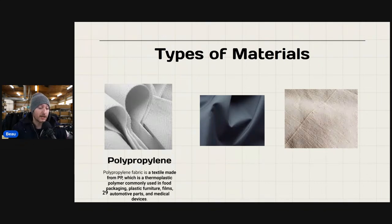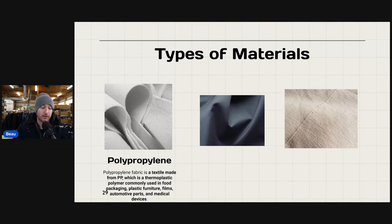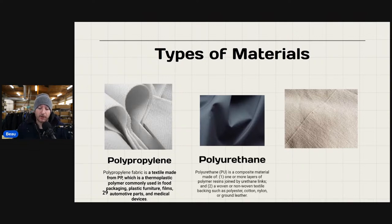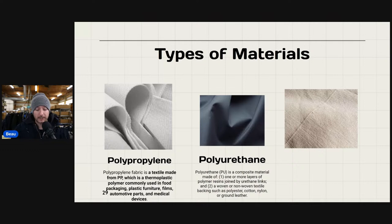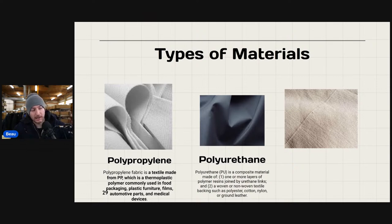Polypropylene is a fabric and textile made from PP, a thermoplastic polymer commonly used in food packaging, plastic furniture, films, automotive parts, and medical devices. Polyurethane is a composite material made of one or two layers of polymer resins joined by urethane links, with woven or non-woven textile backing such as polyester, cotton, nylon, and ground leather. You'll see polyurethane in faux leather products — instead of saying genuine leather, it'll show a combination of polyurethane and other materials.